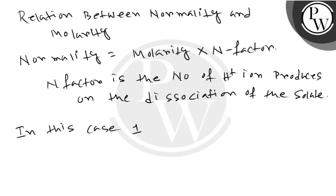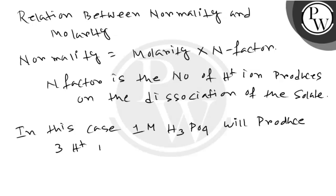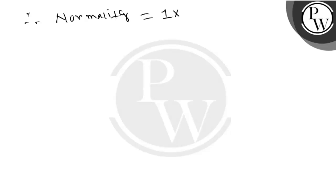In this case, one molar H₃PO₄ will produce three H⁺ ions on dissociation. Therefore, normality equals molarity, which is one, multiplied by the n-factor, which is three, giving us three.